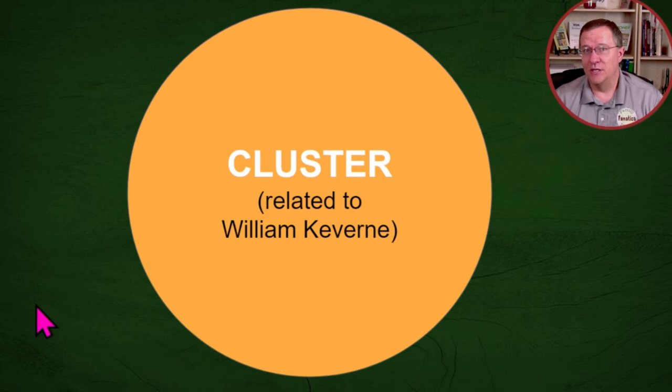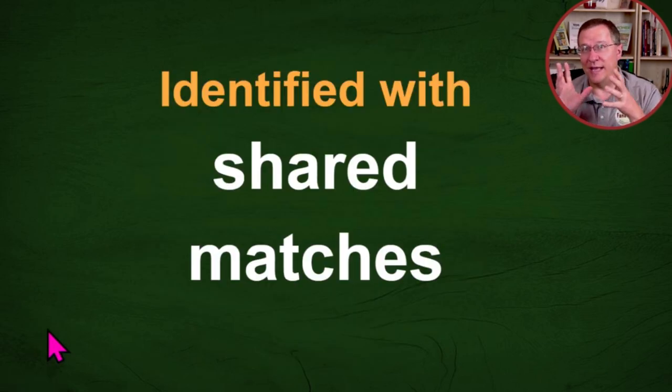Now this cluster is related probably to some distant ancestor. So for instance, this cluster is related to my ancestor William Cavern. That's a good start. And now we can go and we can look at how we identify these people.